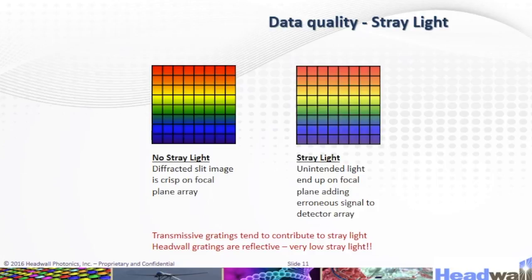Here we have data quality with respect to stray light. On the left, you can see no stray light — a diffracted slit image is crisp on the focal plane array. On the right, with stray light, unintended light ends up on the focal plane, adding error to the signal at the detector array. Transmissive gratings tend to contribute to stray light. Headwall gratings are reflective, resulting in very low stray light.